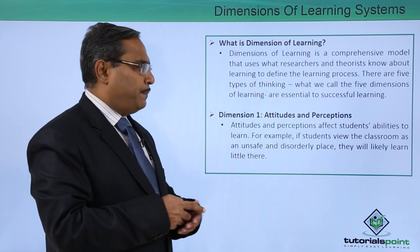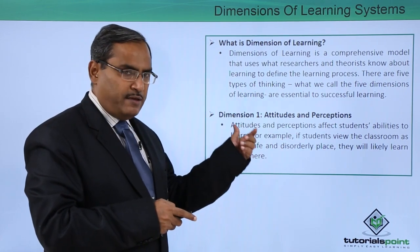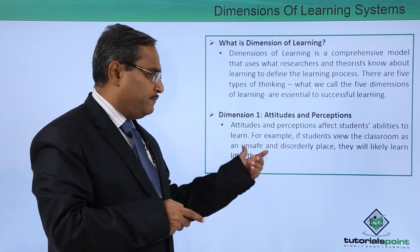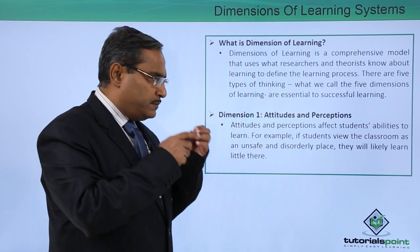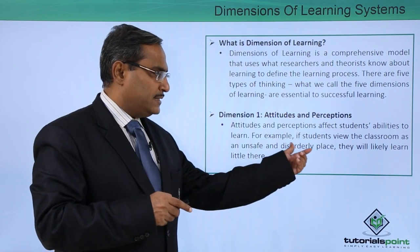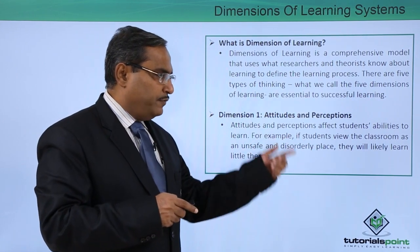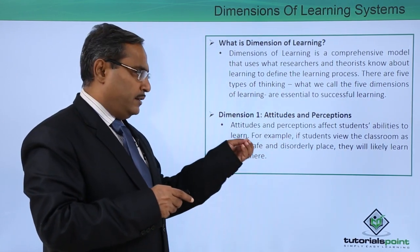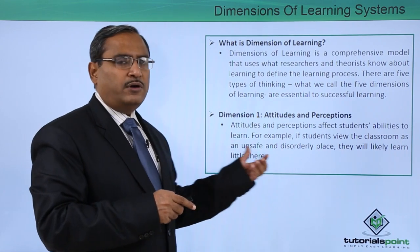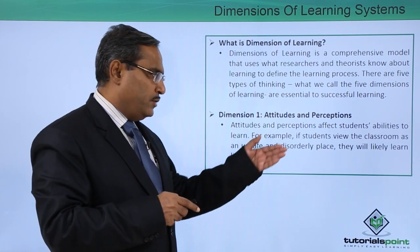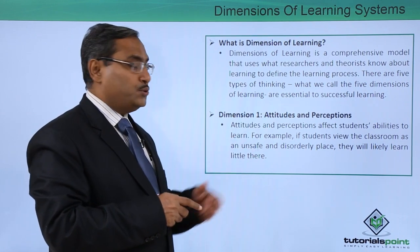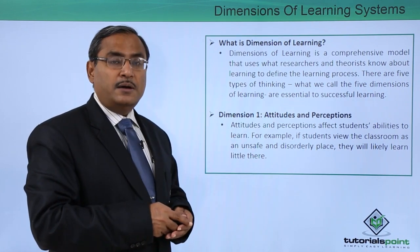Attitudes and perceptions affect students' abilities to learn. For example, if students view the classroom as an unsafe and disorderly place, then obviously the student will not like to use that place for their learning process and they will learn little there. That is known as attitudes and perceptions.